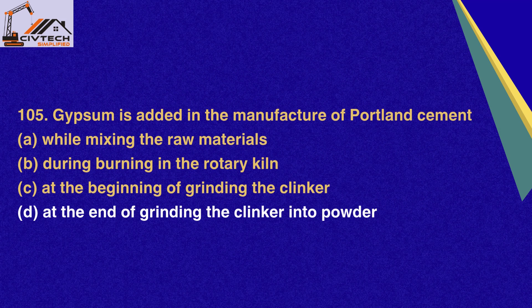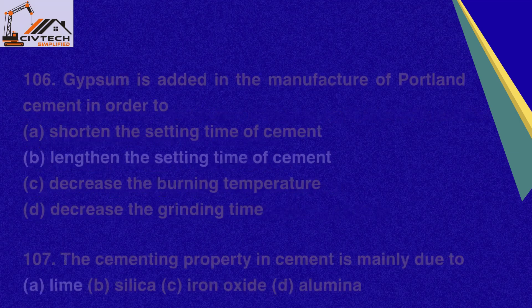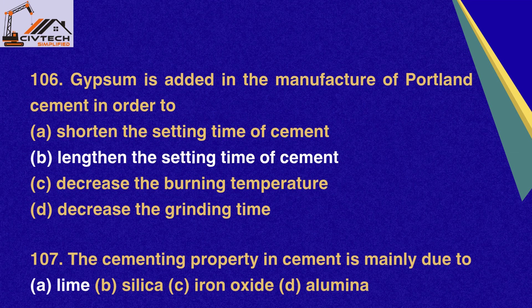Question 105. Gypsum is added in the manufacture of Portland cement: A. While mixing the raw materials, B. During burning in the rotary kiln, C. At the beginning of grinding the clinker, D. At the end of grinding the clinker into powder. Correct option D: At the end of grinding the clinker into powder. Question 106. Gypsum is added in the manufacture of Portland cement in order to: A. Shorten the setting time, B. Lengthen the setting time, C. Decrease the burning temperature, D. Decrease the grinding time. Correct option B: Lengthen the setting time of cement.